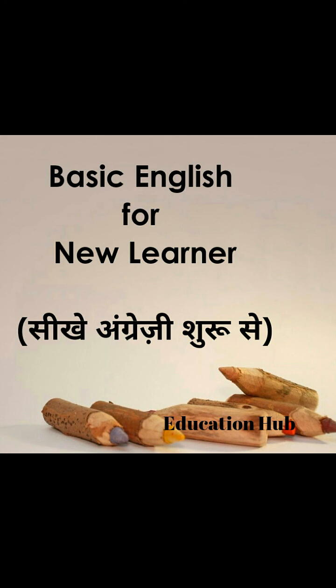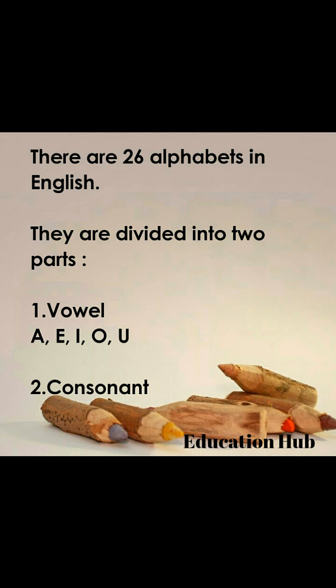First of all, there are 26 alphabets in English and they are divided into two parts. The first one is vowel and the second one is consonant. Vowels are: a, e, i, o, u — these are vowels.